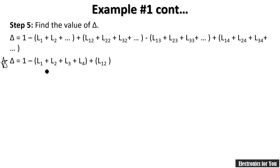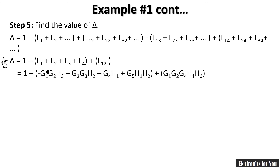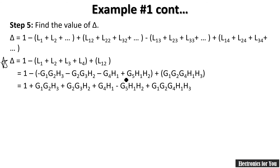Substituting the values of L1, L2, L3, L4, and L12 into the delta formula and simplifying: negative terms become positive and positive terms become negative as signs are applied, giving us the final numerical value of delta.